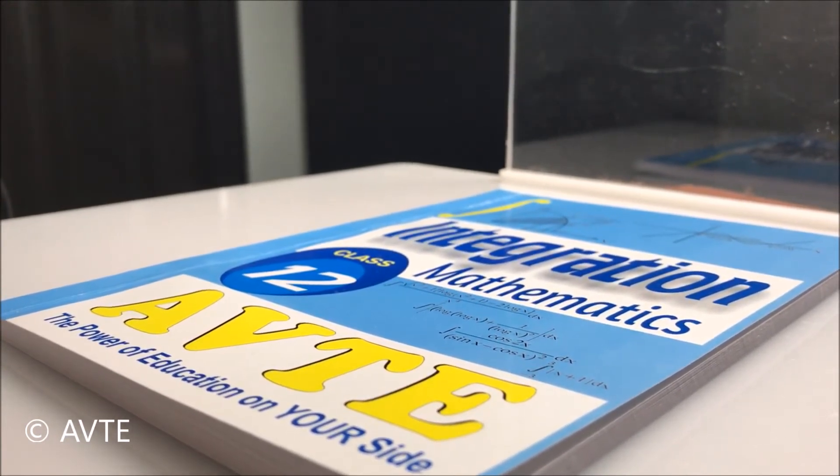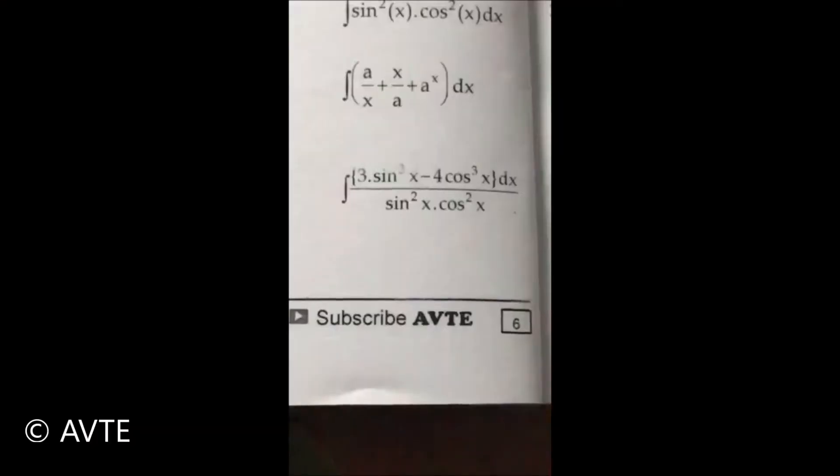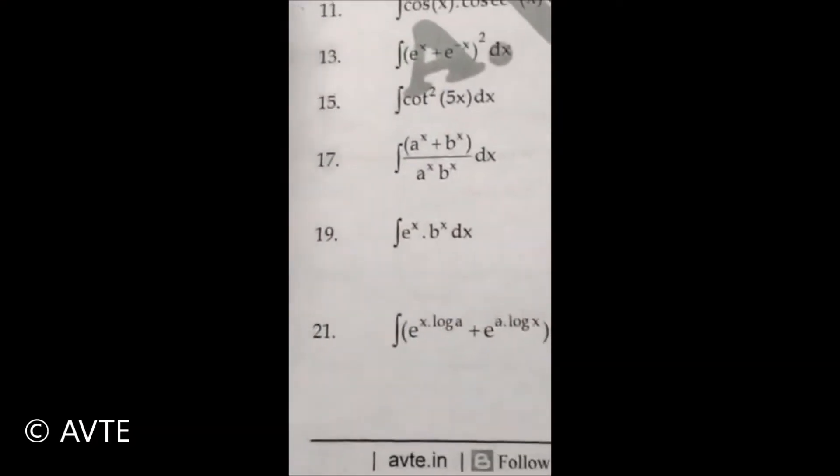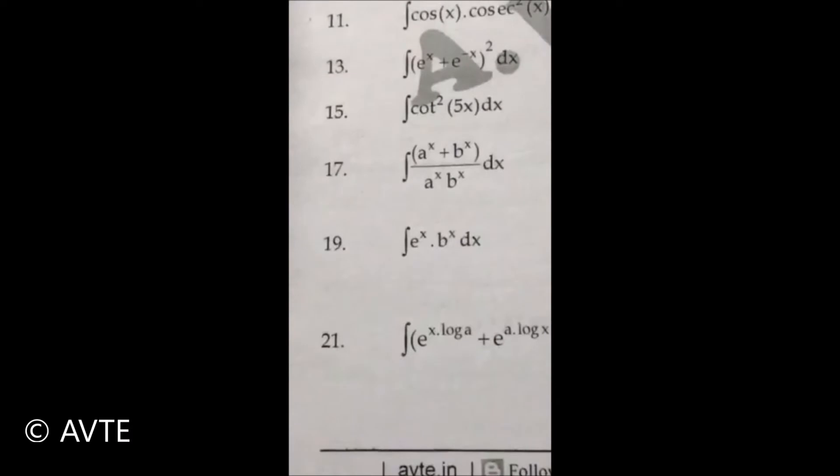Come to the hints on page number six. People generally have problems in question number 19. Since the powers are the same, you can collect BE, you can multiply BE, and it will be raised to power x. This turns to one exponential function and the answer will obviously be BE raised to power x divided by log BE.